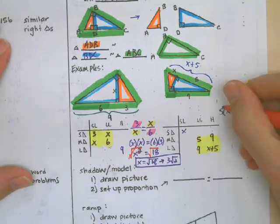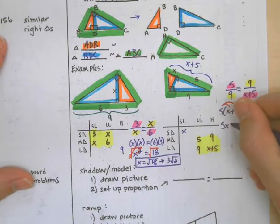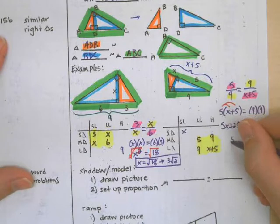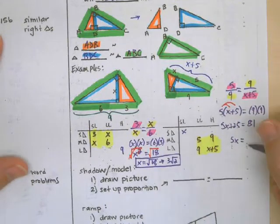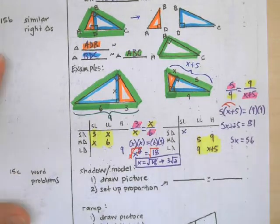Notice I'm going to use the distributive property here. 5X plus 25 equals 81. Subtract 25 from both sides. 5X equals 56.